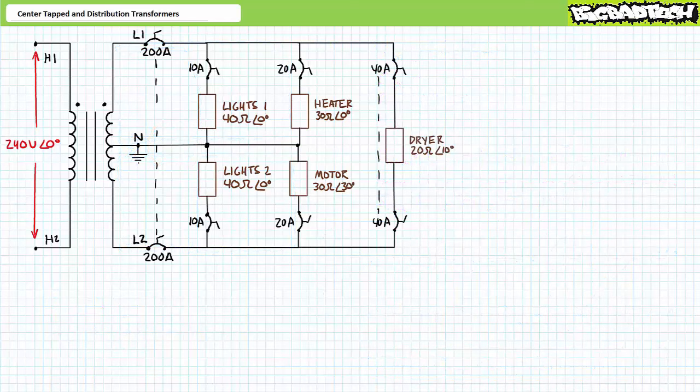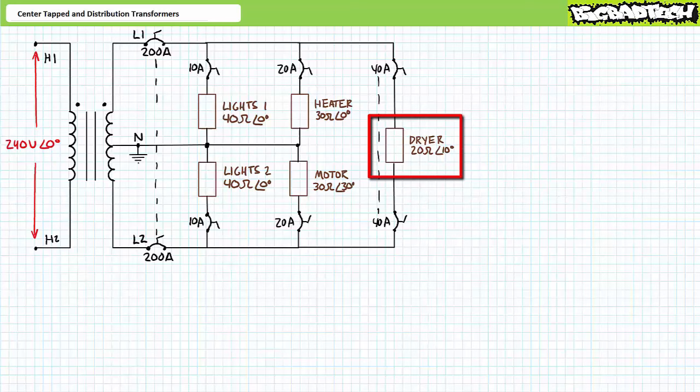Split phase systems still offer 240 volts for larger loads. Consider a dryer modeled as a 20 ohm at an angle of 10 degree complex impedance protected by a mechanically interlocked 40 amp circuit breaker between L1 and L2. The presence of the dryer in no way, shape, or form affects the two lighting loads, nor the heater or the motor. The lights continue to draw 3 amps of current out of phase with one another and each continue to consume 360 watts of power. The heater continues to draw 4 amps and the motor continues to draw 4 amps at an angle of 150 degrees. The dryer experiences the full differential of 240 volts at an angle of 0 degrees between L1 and L2.